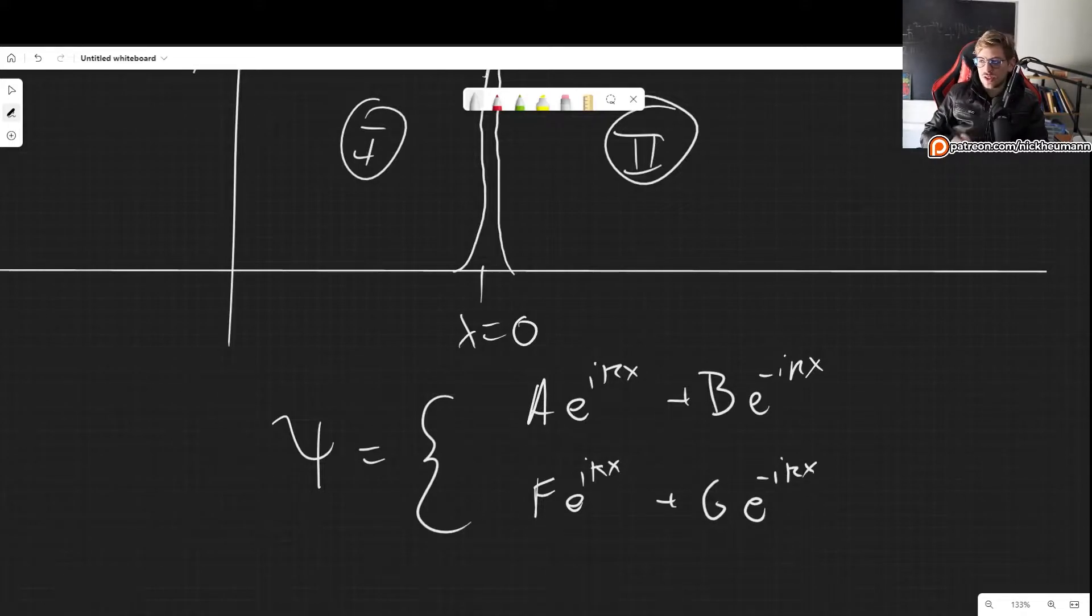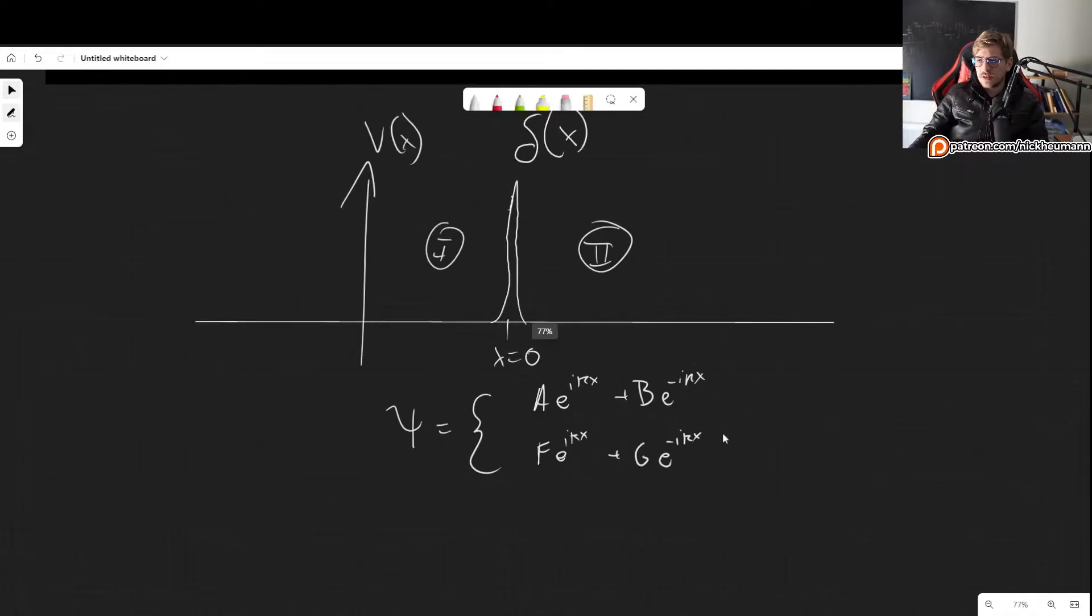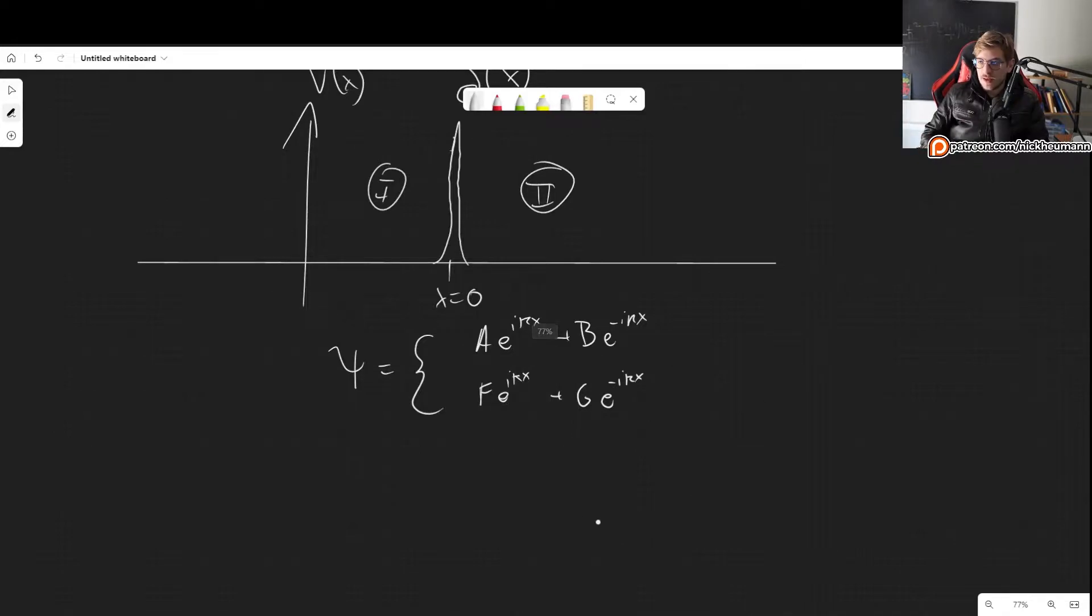You could of course just call them C and D if you want. Ge^(-ikx). Now normally we take G to be 0, but just to do this in a very general case, let's say that it's not 0. It could be something else. So applying border conditions, we get continuity at x equals 0.